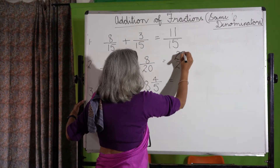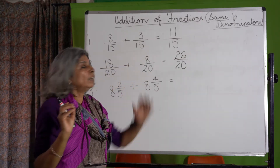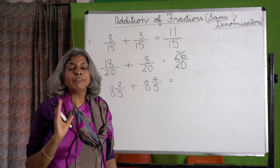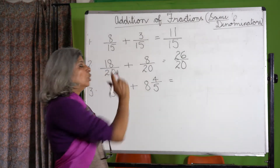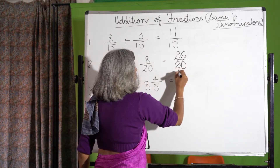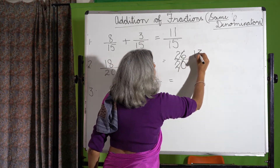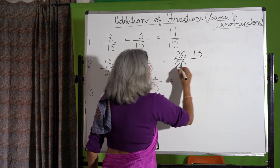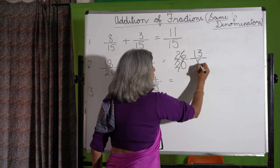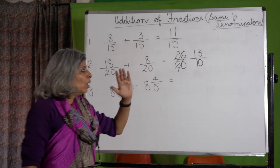Now children, when we have a sum like this, we never leave an answer as an improper fraction unless asked for, and we always give the answer in the lowest term. So what do we do? We reduce it first. 2 goes into both: 26 divided by 2 is 13, and 20 divided by 2 is 10, giving us 13 upon 10.